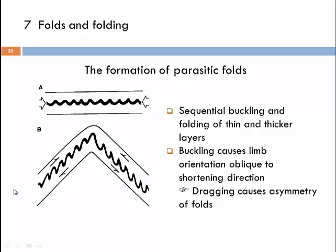When we look at what happens to the limbs, they are getting rotated compared to the original horizontal orientation. The shortening direction remains constant — horizontal — but now it acts obliquely on these two fold limbs, putting them under a certain shear stress. The shear stress has a different direction, and the resulting shear strain has an orientation that is opposite on each limb.